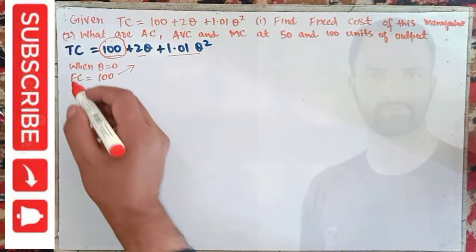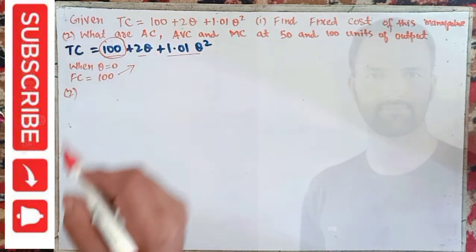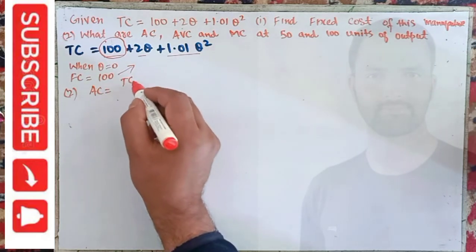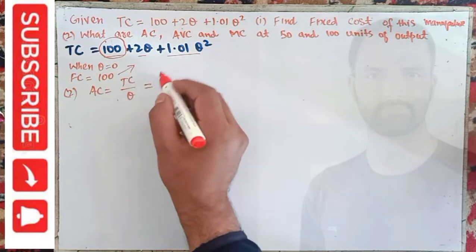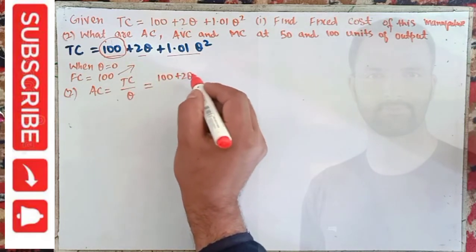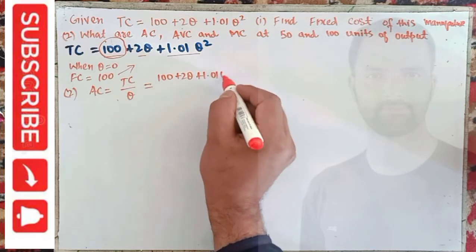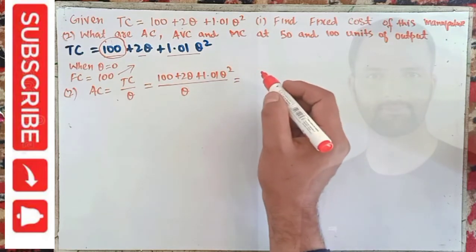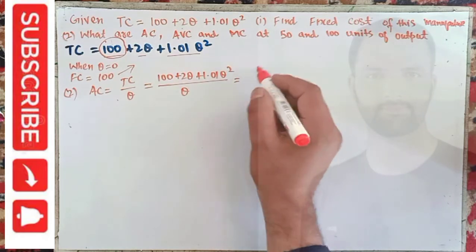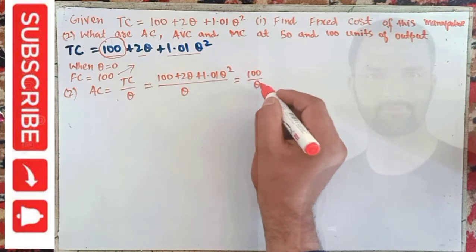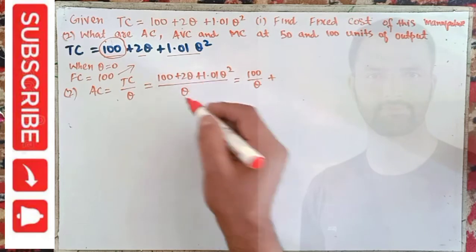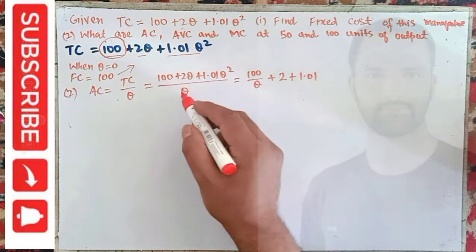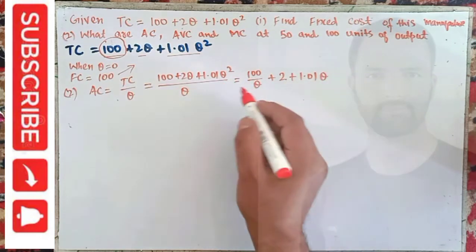Coming to the next part — finding average cost. Average cost is equal to total cost divided by quantity. Total cost is 100 + 2Q + 1.01Q², and we divide by Q. This comes out to be 100/Q + 2 + 1.01Q, since the Q terms cancel. So our average cost function is AC = 100/Q + 2 + 1.01Q.